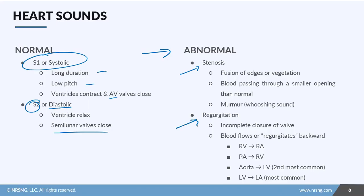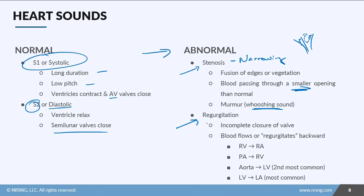There are two abnormal heart sounds we look at: stenosis and regurgitation. Stenosis is basically a narrowing. The reason it narrows is either because of fusion — imagine the edges of your valve get fused together, so it's not as pliable and blood passes through a smaller opening than normal. You can also get vegetations, which are essentially little growths along the valves that create a smaller opening, producing a murmur or whooshing sound.